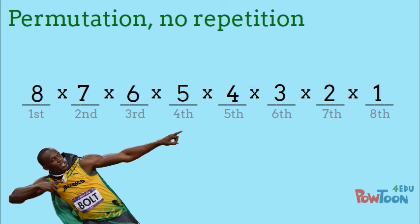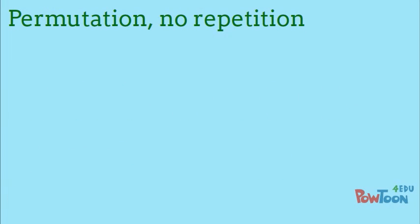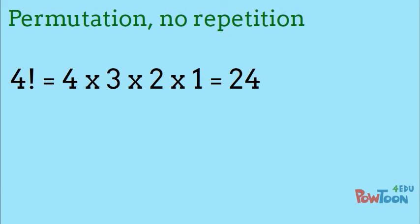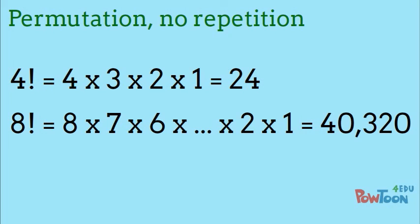So our answer would be 8 factorial. The factorial operation multiplies the number by every number less than it all the way down to 1. 4 factorial equals 24. And 8 factorial equals 40,320. That means there are over 40,000 possible outcomes for an 8 person sprint.